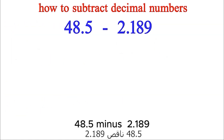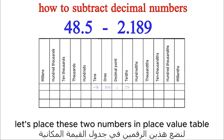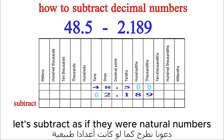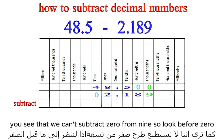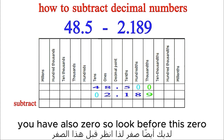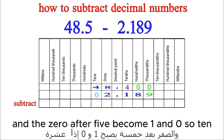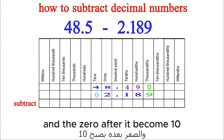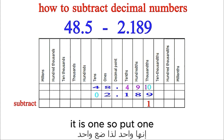Example: 48.5 minus 2.189. Let's place these two numbers in a place value table, then put zeros in empty places. Subtracting right to left: 0 minus 9 — we can't subtract, so look before the 0. We also have 0 there, so look further: we have 5, subtract 1 from 5 to get 4, and the 0 becomes 10. From 10 subtract 1 to get 9, and the next 0 becomes 10. Subtracting 10 minus 9 gives 1.